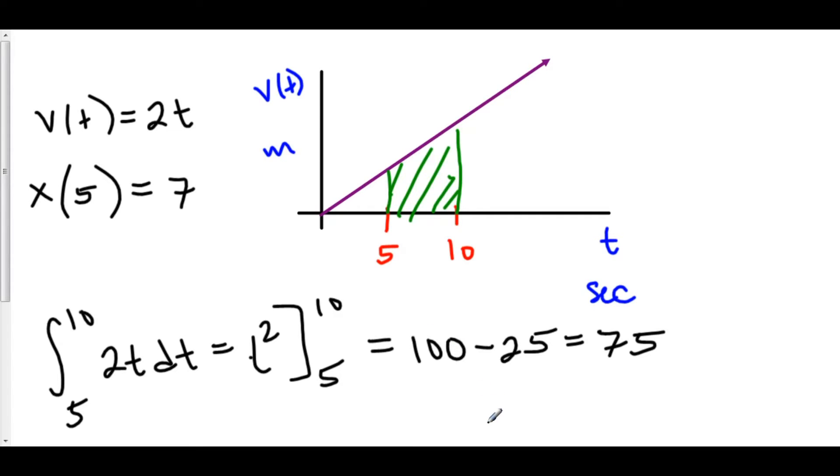And that means that my net change in position is 75. So this is my change in position is equal to 75, and that is from 5 to 10 seconds, from t equals 5 to 10.